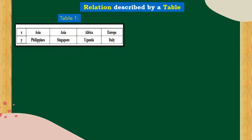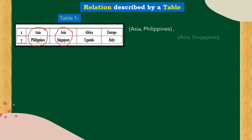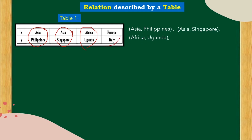Relation described by a table. We have table number 1 with x-coordinates and y-coordinates. The pairs are: Asia-Philippines, Asia-Singapore, Africa-Uganda, and Europe-Italy.